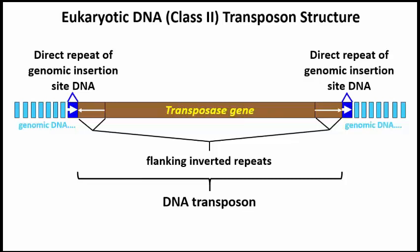Active eukaryotic class II, or DNA transposons, share key features with the bacterial IS and TN elements, as well as complex transposons, including flanking inverted repeats and genes required for transposition — for example, the transposase gene. Like the bacterial elements, they also leave a pair of flanking direct repeats of host cell DNA at the insertion site.